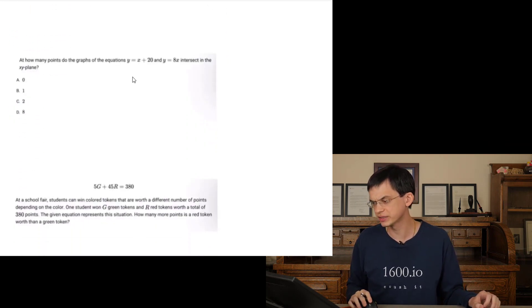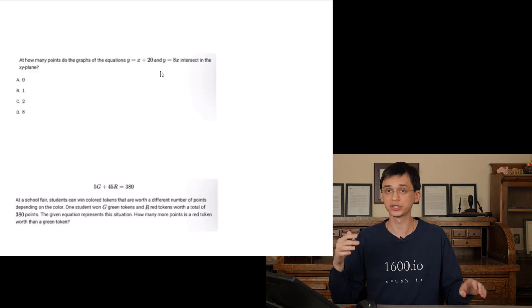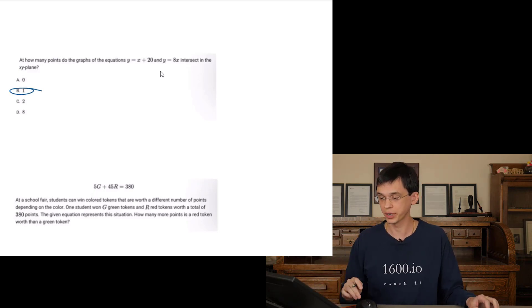At how many points of the graph the equation, this and this intersect. So these two graphs are two lines and that have different slopes. Two lines that have different slopes intersect once. There we go.